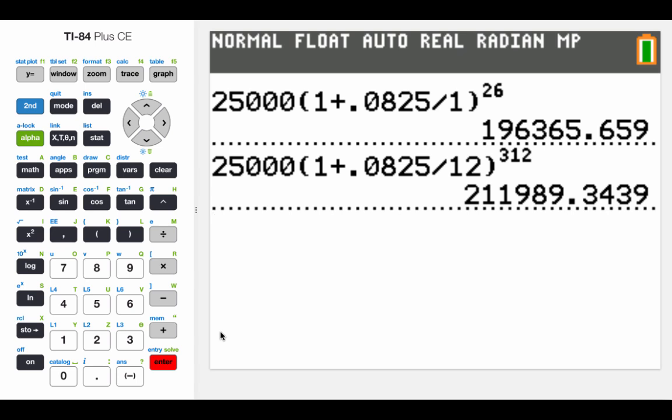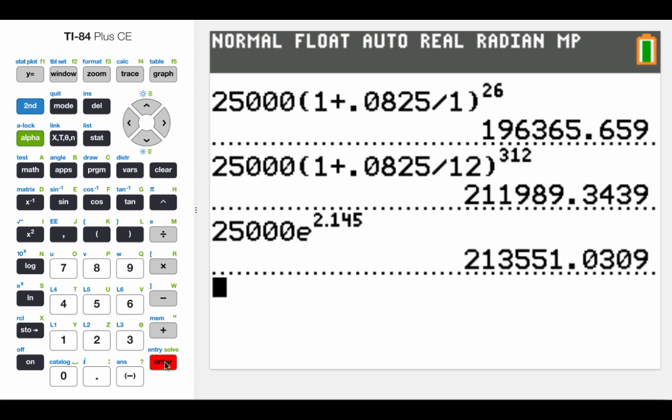Last one, we're doing continuously compounding. When we do this exponent, if we take the 0.0825 times 26, we get 2.145 as our power. Hit enter, and we get $213,551.03.